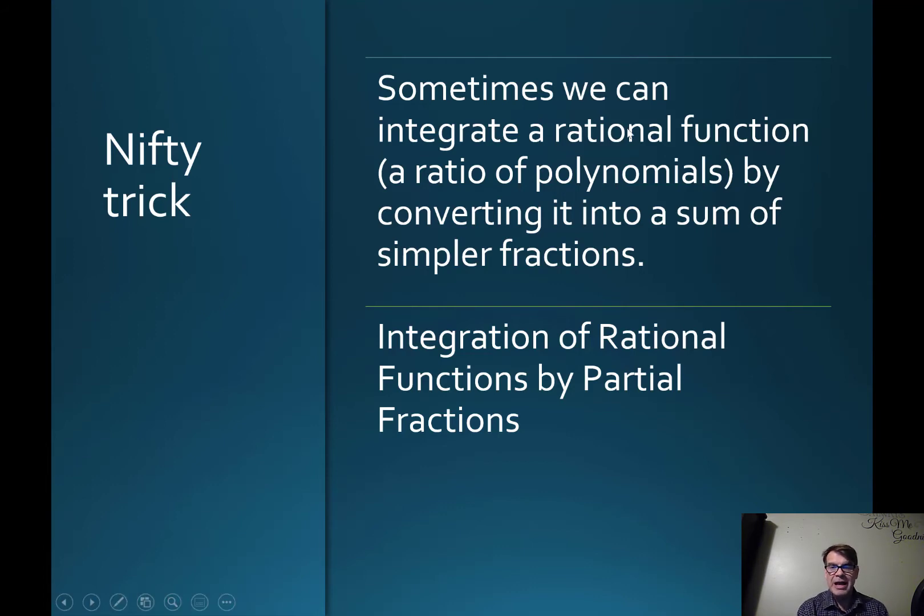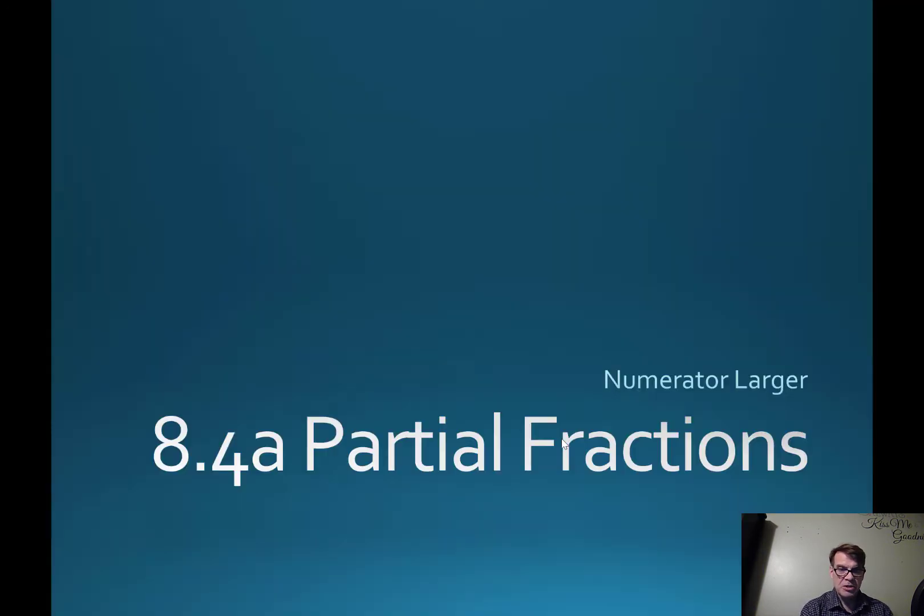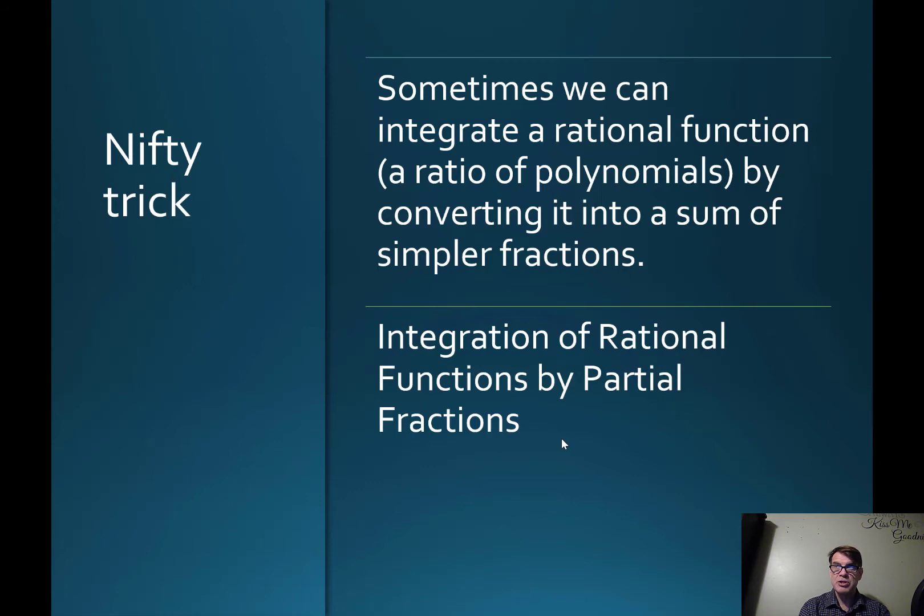Sometimes we can integrate a rational function, a ratio of polynomials—you've got something in the top and something in the bottom in polynomial form, like x to some power. This is how you integrate a rational function by converting it into a sum of simpler fractions. This is section 8.4A in James Stewart's sixth edition calculus, titled Integration of Rational Functions by Partial Fractions.